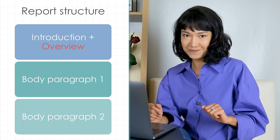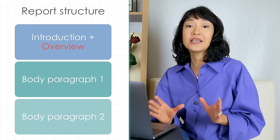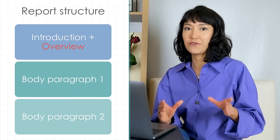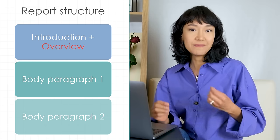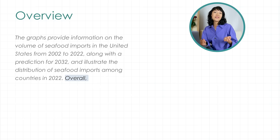Now let's have a look at the overview. An overview is one or two sentences where you summarize what you've learned from the task — what's the big picture? Without going into detail, I think it's best to write your overview together with the introduction in a single paragraph. And it's common to start with the word 'overall' to clearly indicate to the examiner that this is your overview.